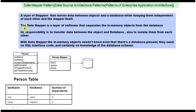The Data Mapper is a layer of software that separates in-memory objects from the database. Its responsibility is to transfer data between the object and the database — getting data from the Person object and putting it in the Person table in the database, and getting person data from the database and putting it in the Person object.